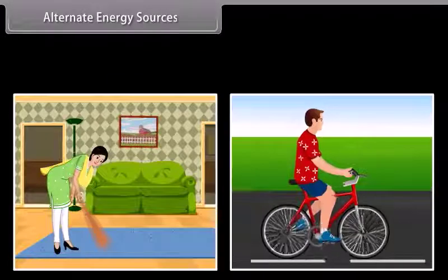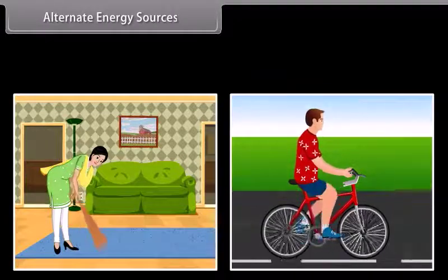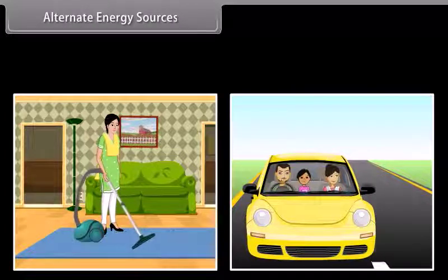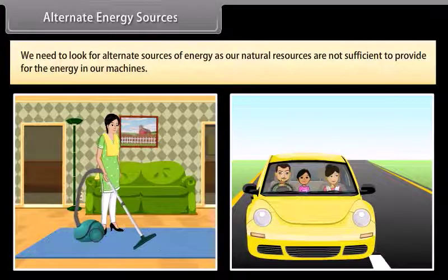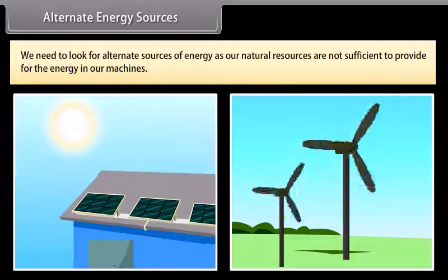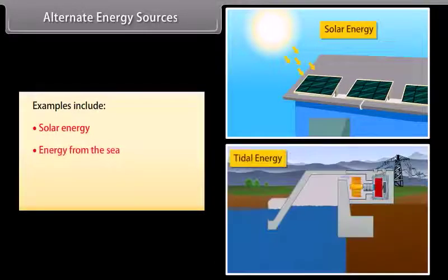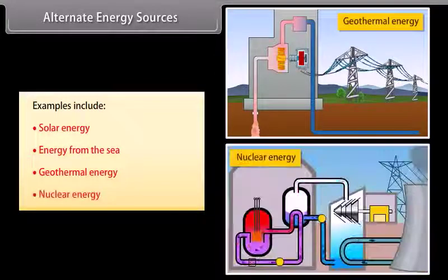Alternate energy sources. As we progressed, our day-to-day life activities also changed. We now get most of our work done by machines. Due to this, we need to look for alternate sources of energy as our natural resources are not sufficient to provide for the energy in our machines. Examples include solar energy, energy from the sea, geothermal energy, and nuclear energy.